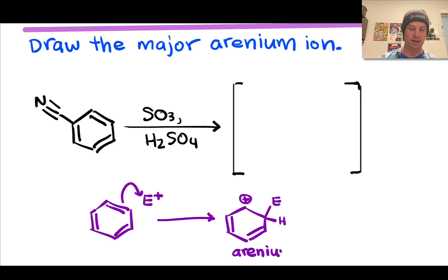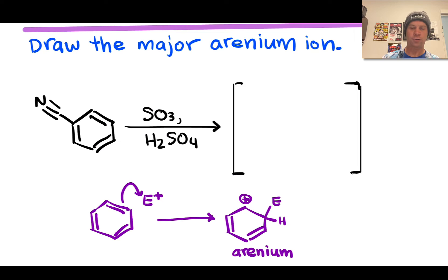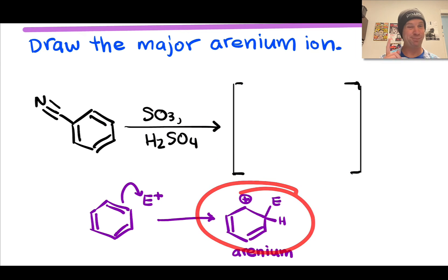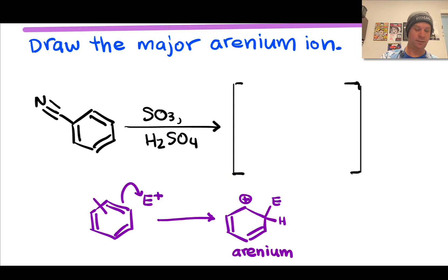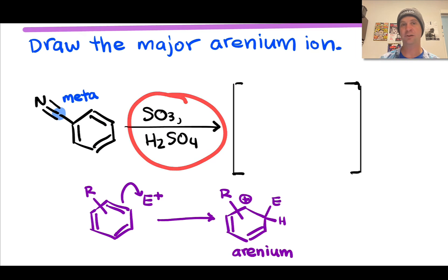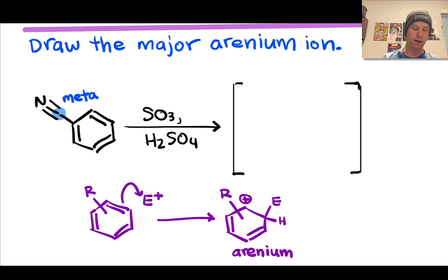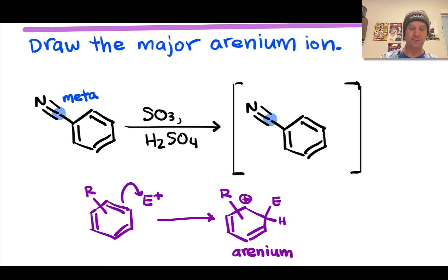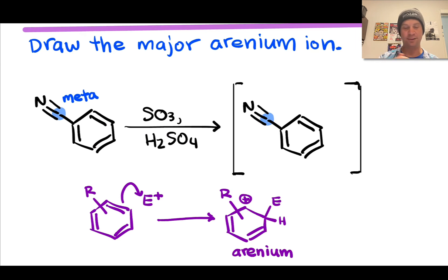Loss of a proton from the arenium ion gives the final EAS product. If there's already a substituent on the ring, we consider directing effects. The cyano group is a meta director, so the SO₃H group added by these conditions should be positioned meta to the cyano group. One approach is to draw the final product first and then work back to the arenium ion.